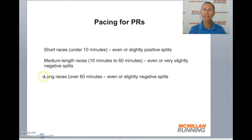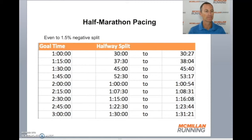When we get to longer races over an hour, we see that even or slightly negative splits yield the best performance. For medium-length races it's even or very slightly negative, and for longer races it's even or slightly negative. So what does this mean for you in the half marathon?